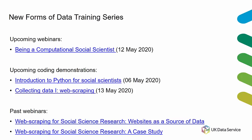This webinar series is part of a wider new forms of data training series here at the UK Data Service. On the 12th of May, we have a webinar looking at the five key skills and knowledge domains related to being a computational social scientist. We're also doing live coding demonstrations over the month of May — roughly half-hour explicit coding demonstrations — and past webinars are available on our YouTube channel with all materials online.